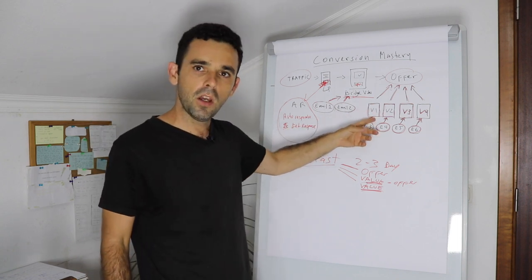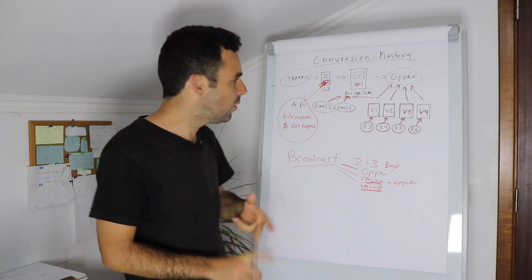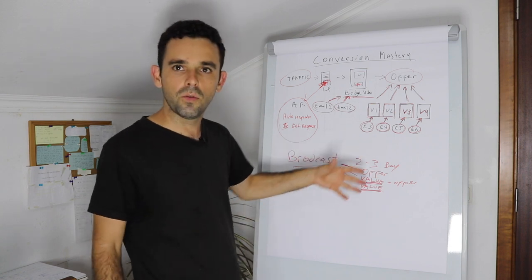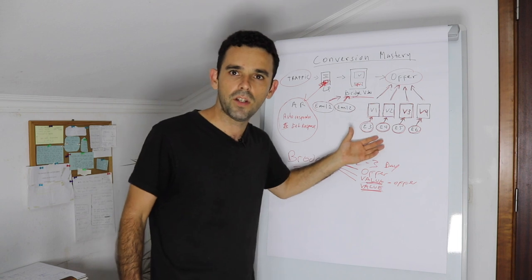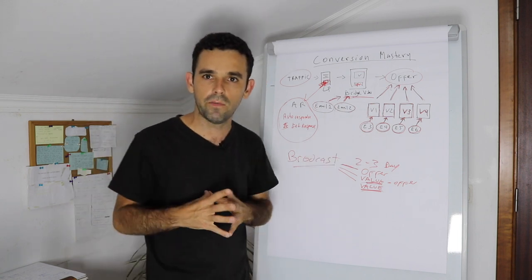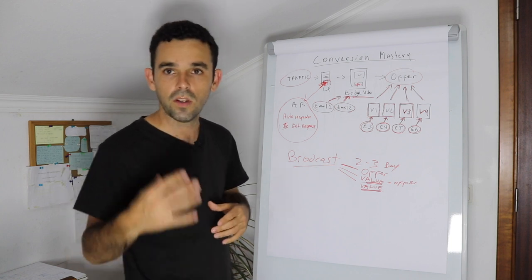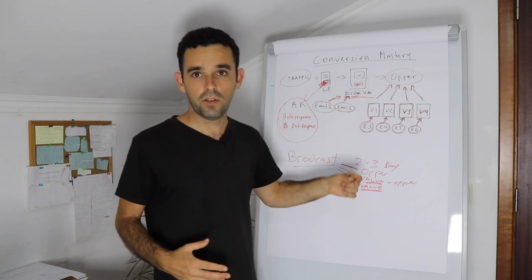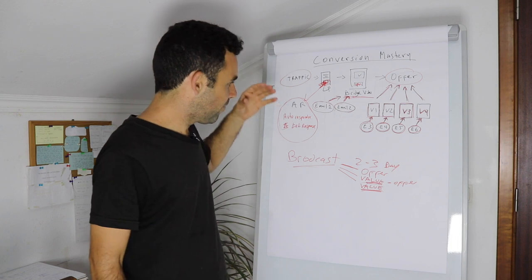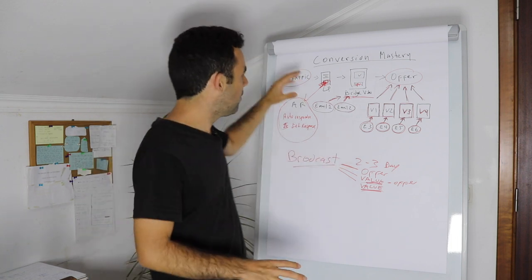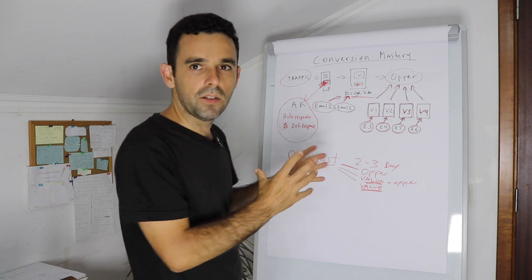And on that page, you have a few things that are very important. What you're doing with the value series is you're building trust with people. People will know you, like and trust you, and therefore, they're more likely to see your opportunity. And what you're doing with the value series is giving them pure value so they see you as an authority, somebody that knows about what they're talking about, the offer, right?